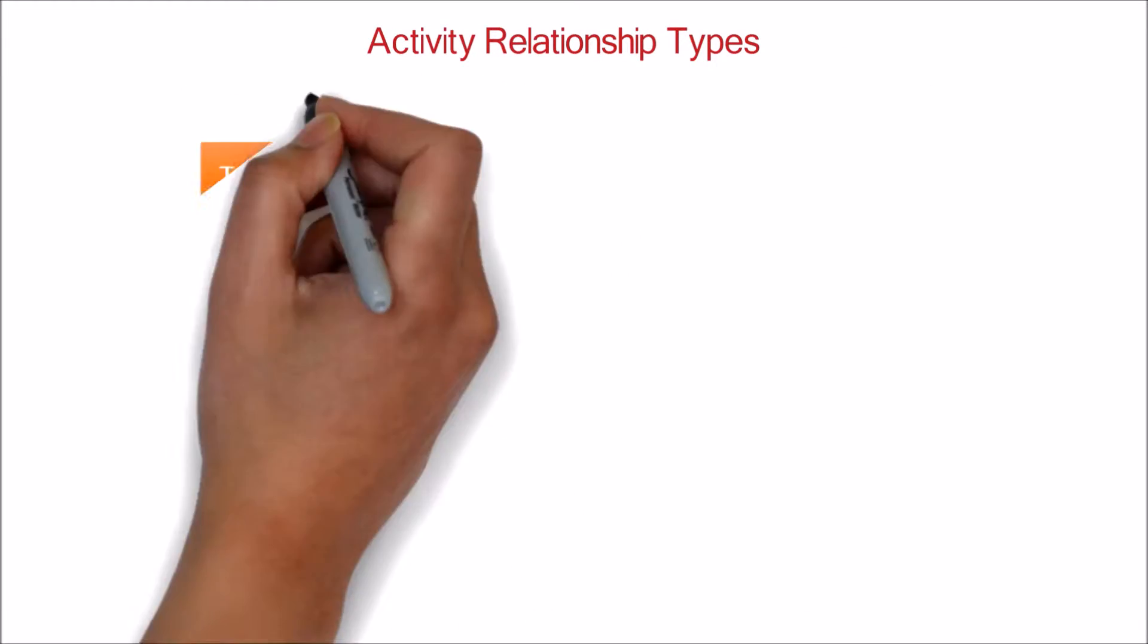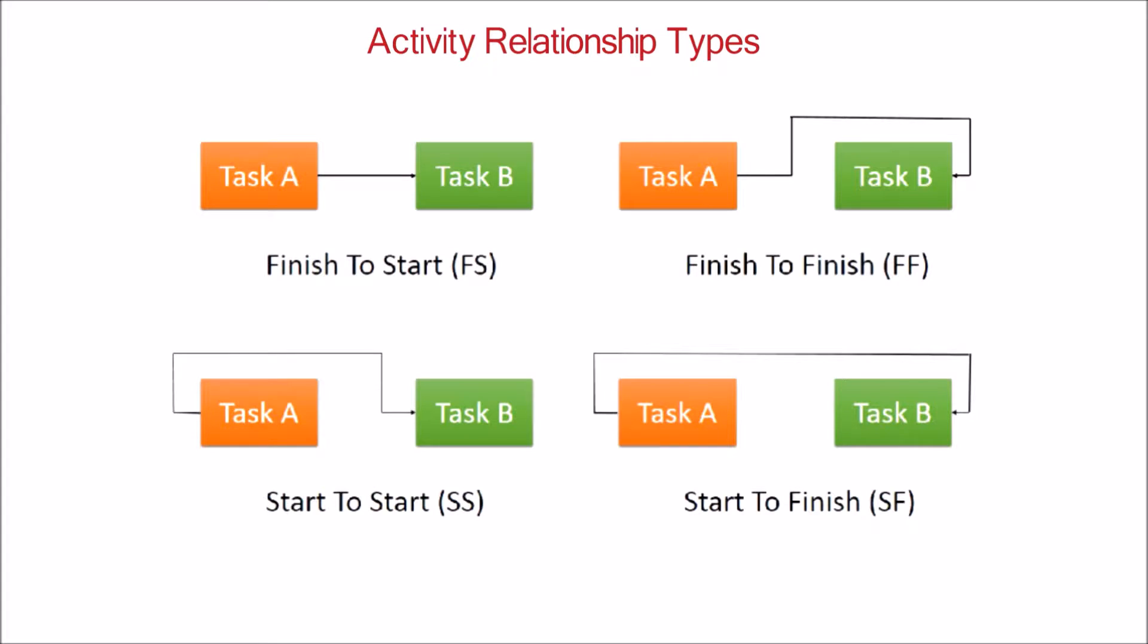Let's look at the activity relationships in project schedule. There are four types of relationships that can exist between the activities in a project schedule. Generally, an arrow is used to indicate the relationship.